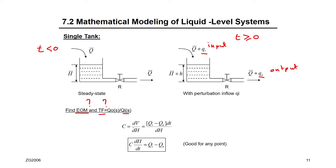To derive the equation of motion, we start from the definition of capacitance: C equals dV/dH, where dV equals (flow in minus flow out) dt. Rearranging, C times dH/dt equals flow in minus flow out. This is the general equation of motion applicable to any problem — the capacity C, which is also the cross-sectional area, times the time rate of change of head equals flow in minus flow out.